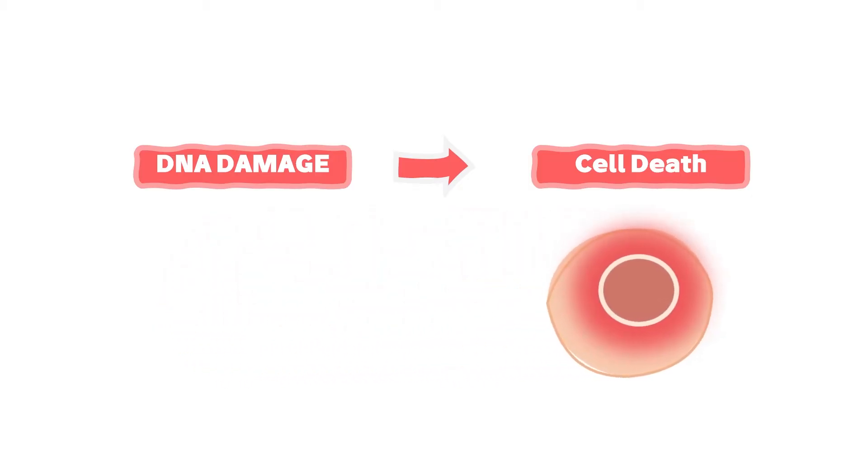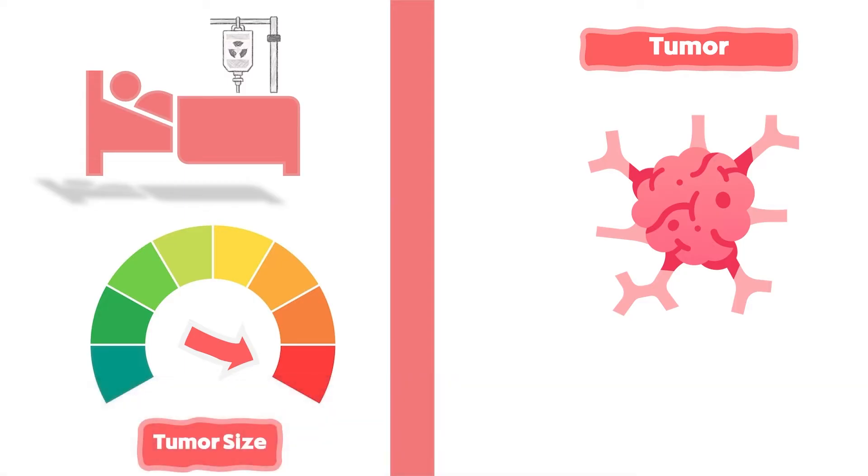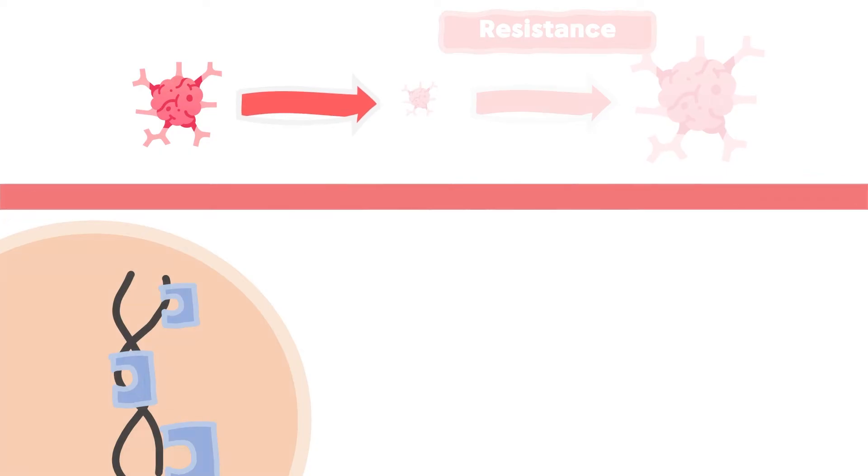The interesting question is: why do some patients exhibit only an initial short-term response before their tumors become resistant and continue their growth? The researchers found that cancer cells can resist cisplatin by increasing the production of special enzymes.